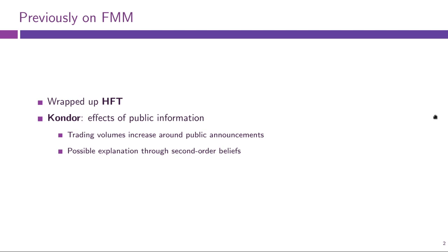We also talked last week about the Condor model, which dealt with the effects of public information and sought to explain that public announcements typically generate a lot of trading volume — which was not predicted by our very standard basic models, in which price adjustments should have happened without any actual trading. Condor took a slightly esoteric theoretical approach by dealing with higher order beliefs.